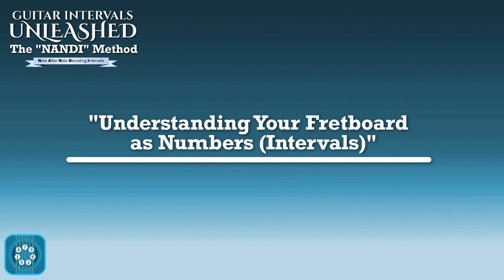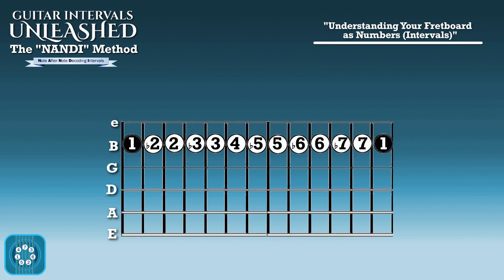The distance between any two notes is known as an interval. If you were to play C to C on your B string, starting at the first fret up to the 13th fret, you could see you would hit every single interval.